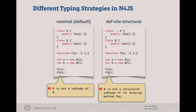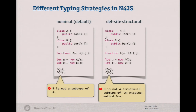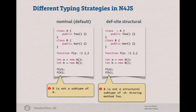Now we're deeply into typing. The Java type system uses nominal typing, which is the default in N4JS as well. In nominal typing, you have to explicitly state that a type is a subtype of another type. For example, class A and class B, not related — you get an error because B is not a subtype of A. In a slightly different example, the error message states that B is not a structural subtype of A with a tilde, because there's a method foo missing. We use this tilde to switch the typing strategy from nominal typing to structural typing.